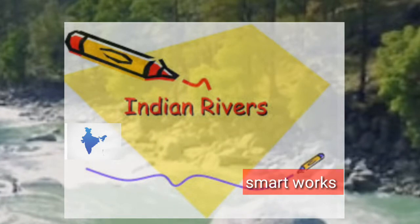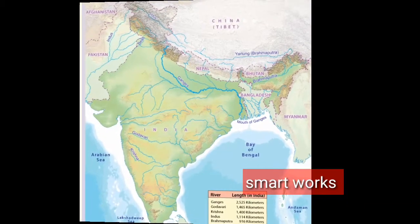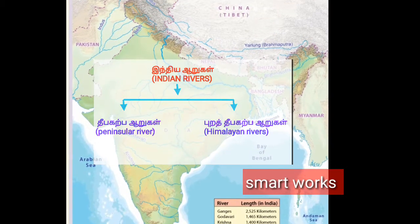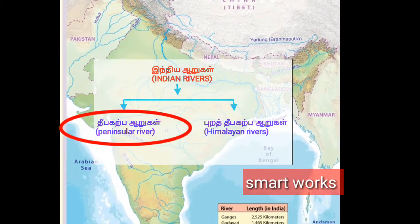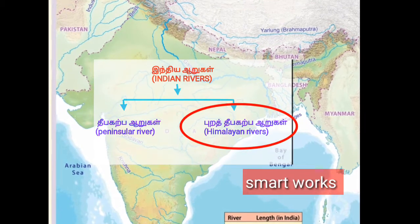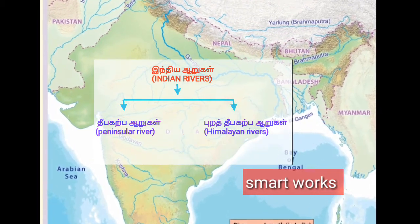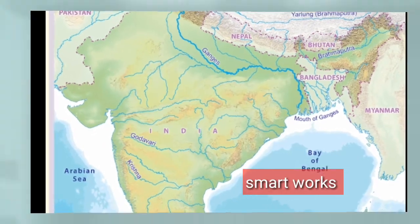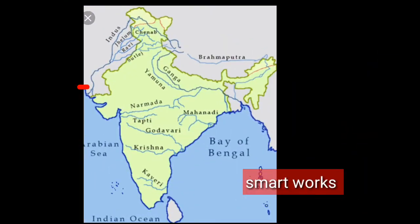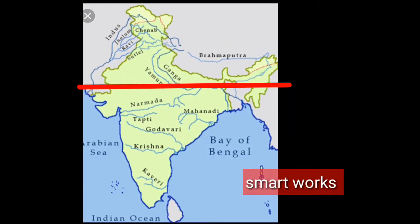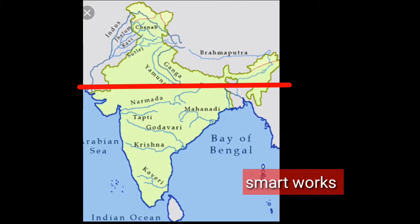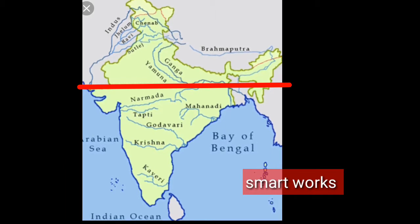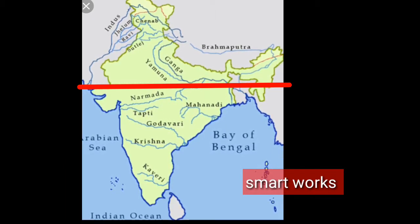We are going to talk about Indian Rivers. Here are two areas. The first is the Peninsular River, and the second is the Himalayan Rivers. Here are two areas — what are the two areas? Here are three areas. This is called the Deep Harpa.